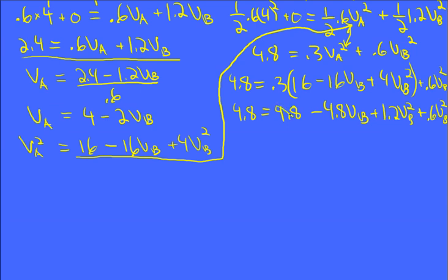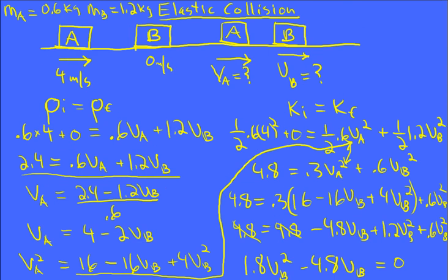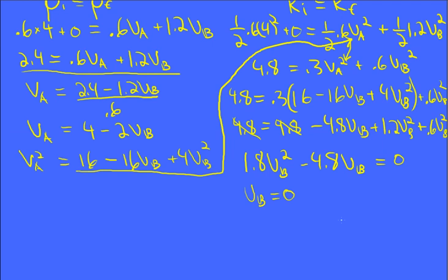And so first of all, I can subtract 4.8 from both sides. Then I can combine these two terms and get 1.8 VB squared minus 4.8 VB equals 0. So look at that. It's a square and a linear term, but no constant. So I don't need the quadratic equation to solve this. One solution is VB equals 0. That's its initial velocity, so that's a good sign. Whenever you solve an elastic collision, one of the velocities will be the velocity without a collision.